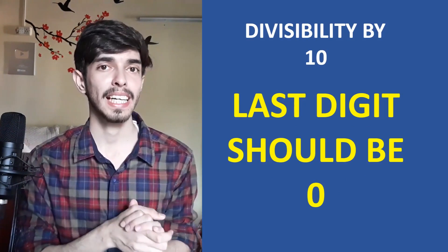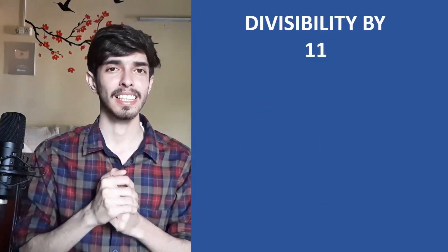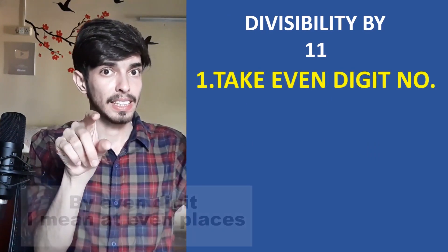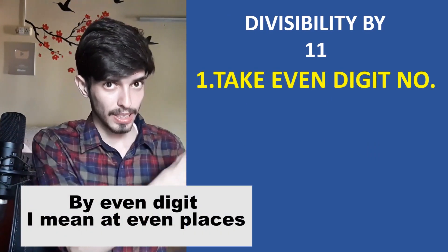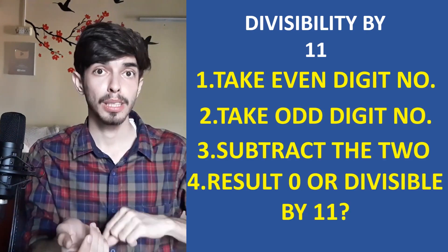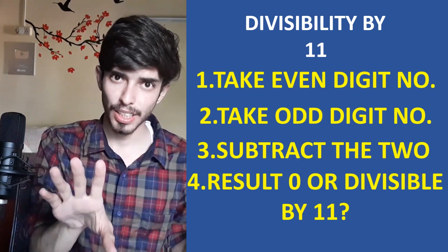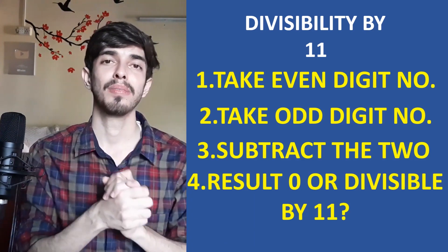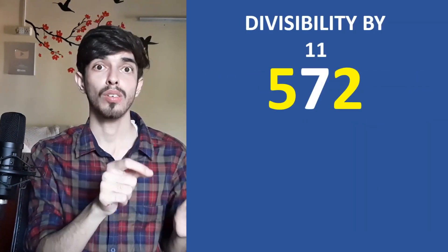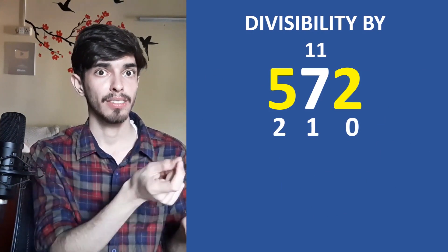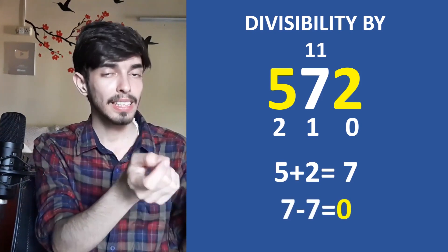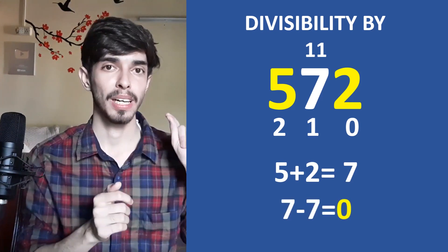Divisibility by 10 is extremely simple: the last digit must be 0. For 11, take the number and add the digits at even positions, then add the digits at odd positions, and subtract the two sums. If the result is divisible by 11 or equals 0, the number is divisible by 11. For example, 572: positions are 2 (pos 0), 7 (pos 1), 5 (pos 2); so (5+2) - 7 = 0, so 572 is divisible by 11.